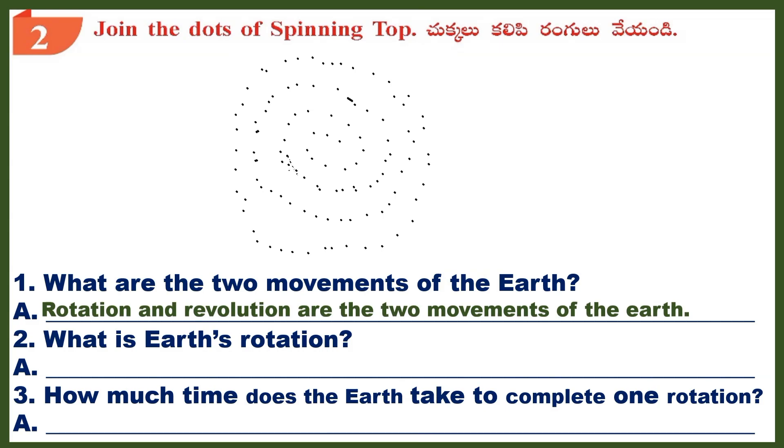Question 2: What is Earth's rotation? Answer: Movement of the Earth on its own axis is called rotation of Earth.